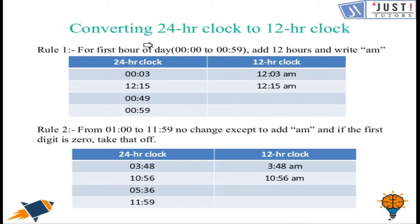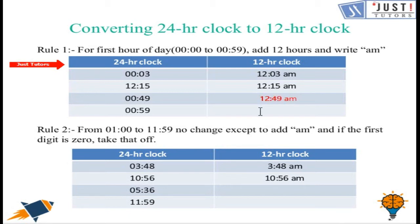Now let's discuss converting 24-hour clock to 12-hour clock. Rule number 1: for the first hour of the day, from midnight to 00:59, we need to add 12 hours and write am. So 00:03 is written as 12:03 am, 00:49 as 12:49 am, and 00:59 as 12:59 am.